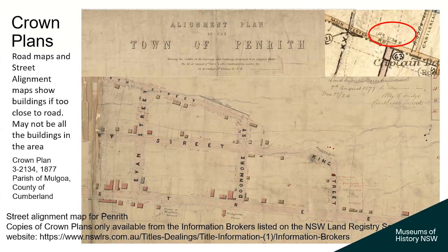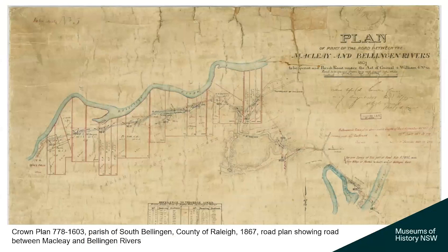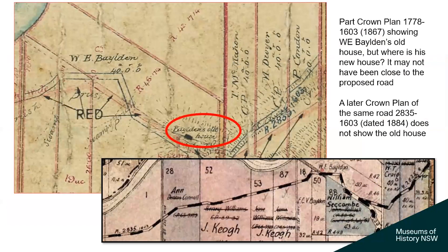These plans show buildings — most crown plans don't — though I can't quite make up my mind as to whether it shows all the buildings in the town when the streets are aligned or only the ones close to the road. You get the number by looking at the parish maps, with numbers running alongside the edges of the road. Here we have an example of a road map between the Maclay and Bellingen Rivers, 1867. Zooming in, you'll see that a proposed change to the road in blue is going to come too close to Baldwin's old house. By the next map in 1884, the house is not mentioned at all.